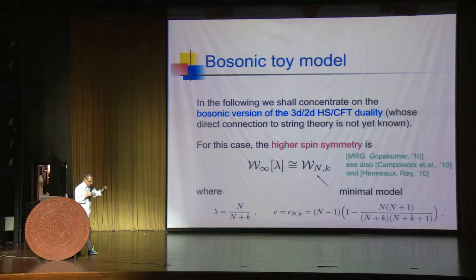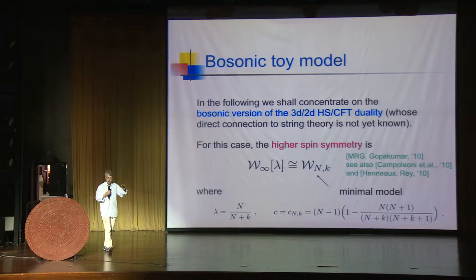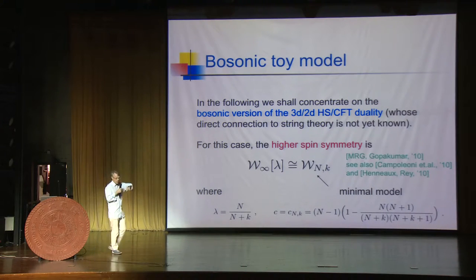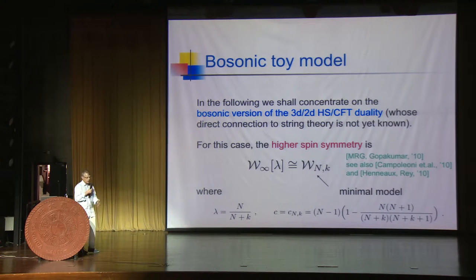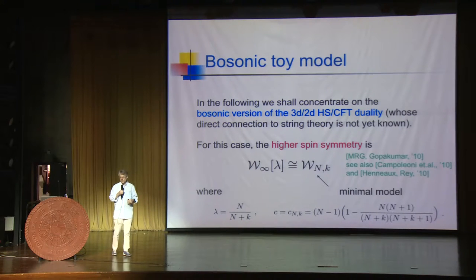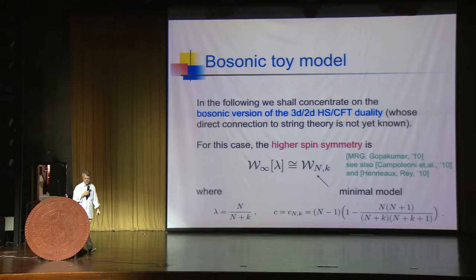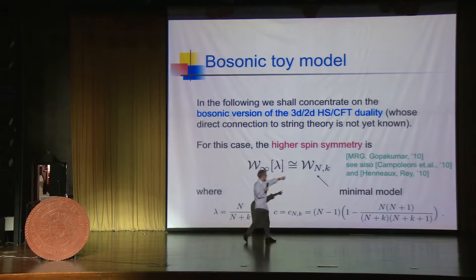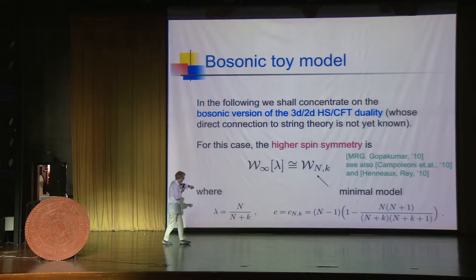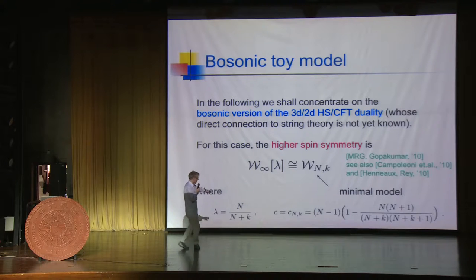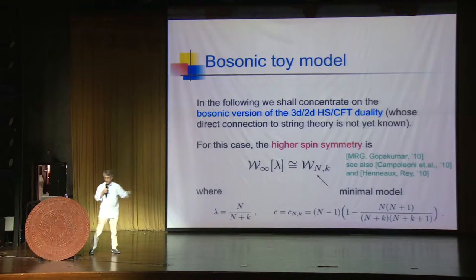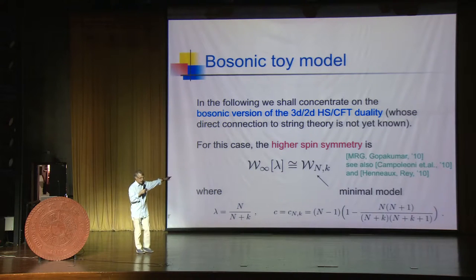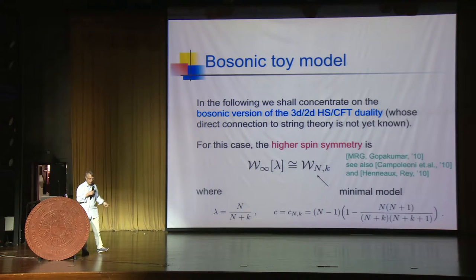In the following, I shall not discuss the N equals to 4 superconformal situation where we really understand the embedding into string theory, but I'll concentrate on the simpler bosonic duality involving the original bosonic higher spin CFT duality, because it's technically much simpler. Eventually we hope to generalize what we've been understanding to the supersymmetric setting, but we haven't reached that far yet. In this case, the higher spin symmetry is the W-infinity of lambda algebra, which you can think of as the minimal models W_{N,K} in the limit where lambda equals N over N plus K, with the standard minimal model central charge.